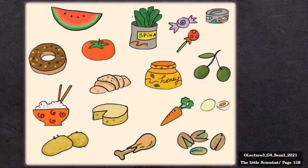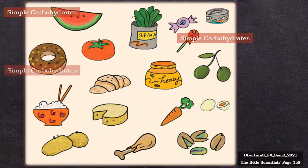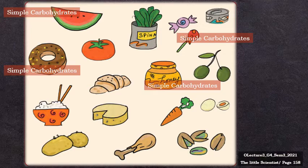Food is important — it provides us with nutrients, and nutrients are substances everybody needs in order to function. What are different nutrients that these kinds of foods contain? Foods that taste sweet — watermelon, lollipops, donuts, and honey — are rich in simple carbohydrates or simple sugars. They are all sources of energy.